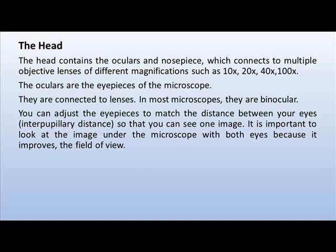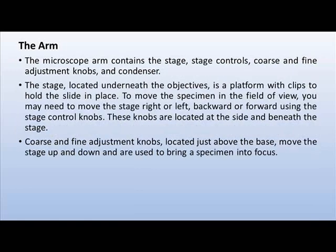In most microscopes the oculars are binocular. You can adjust the eyepieces to match the distance between your eyes, also called the interpupillary distance, so that you can see one image. It is important to look at the image under the microscope with both eyes because it improves the field of view.